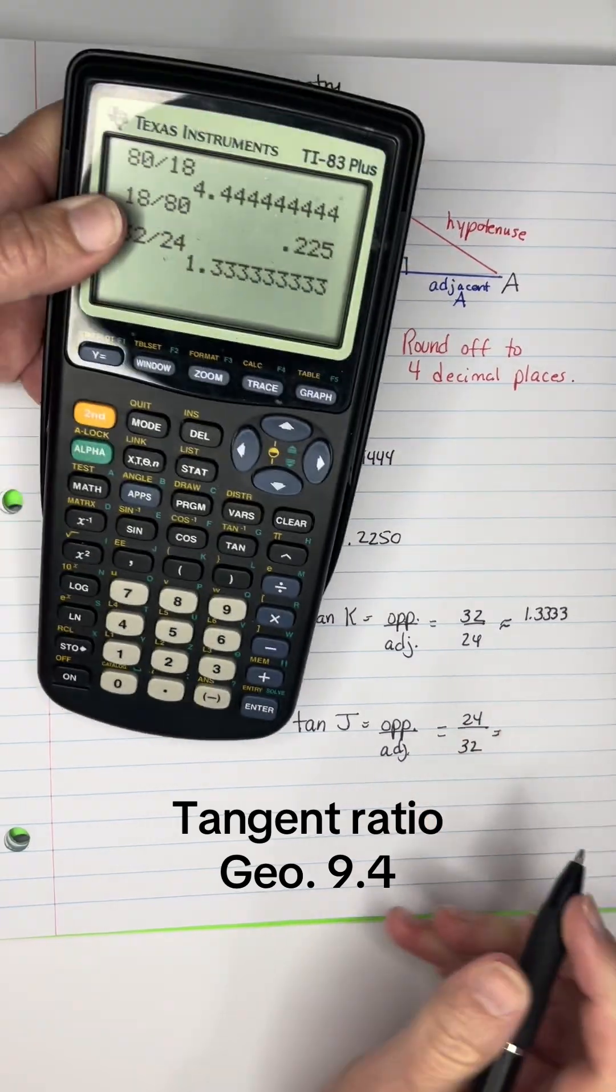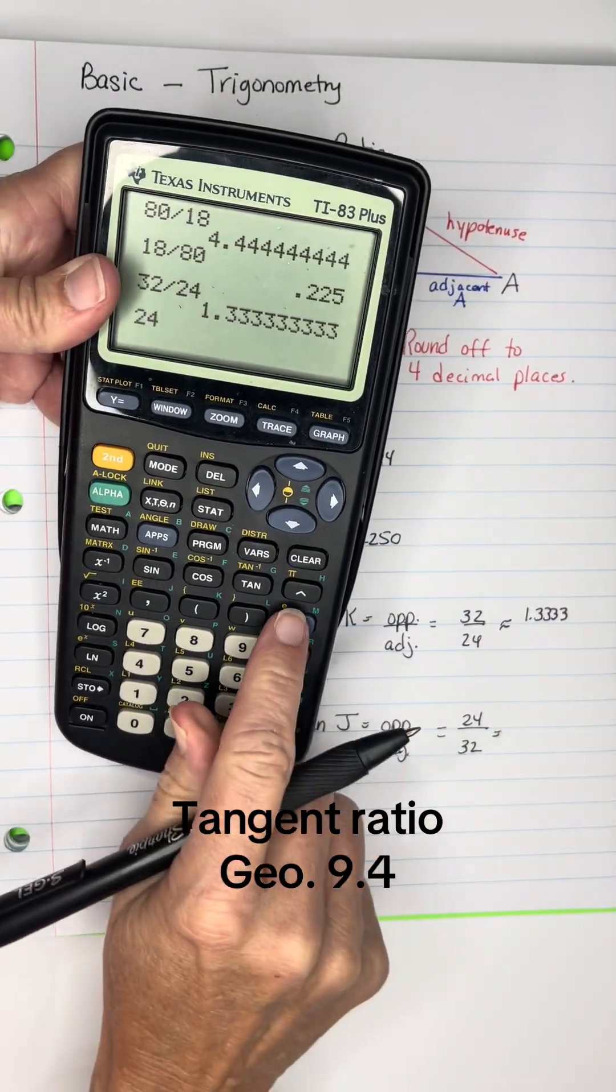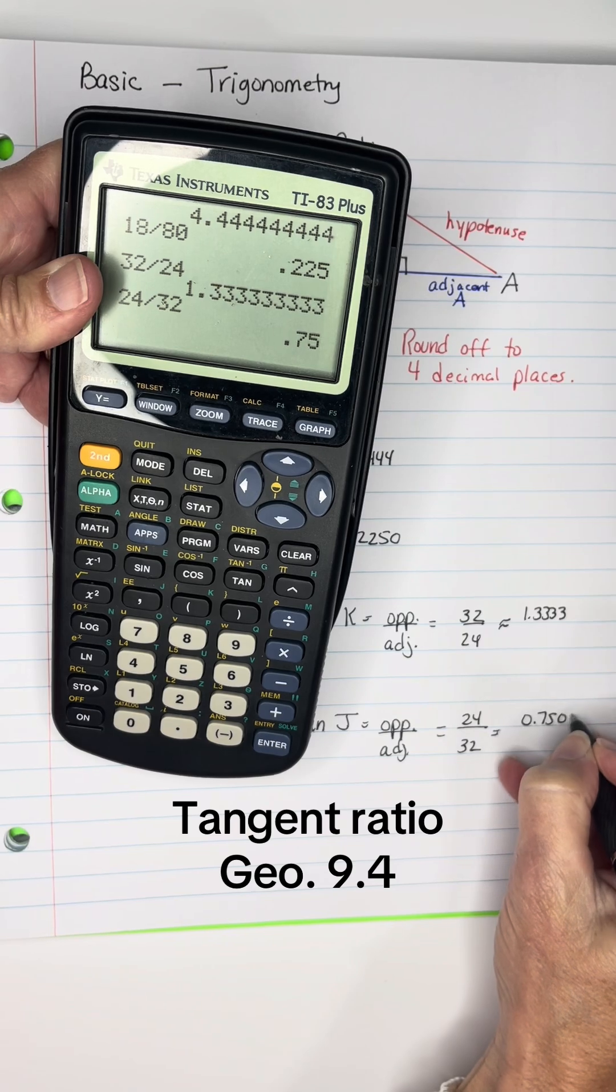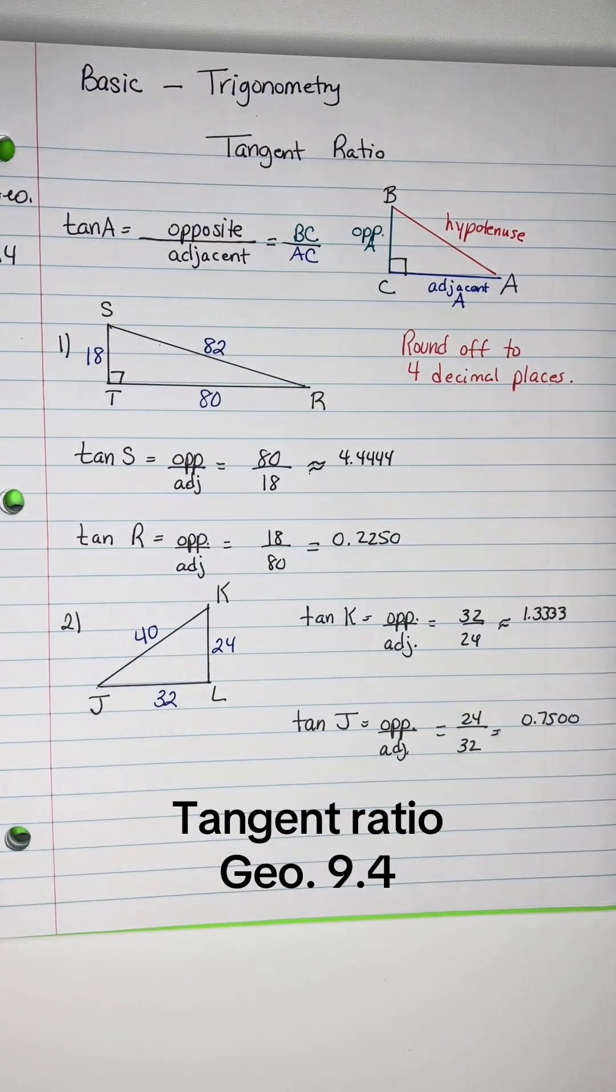Notice these values are flipped. 24 divided by 32 equals 0.7500, giving us four decimal places.